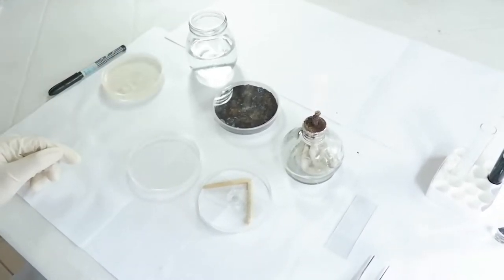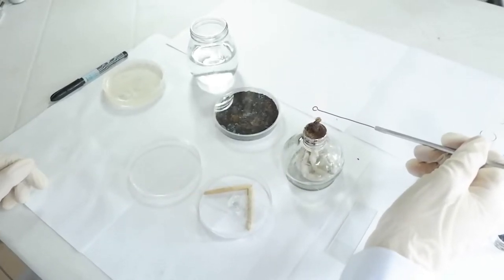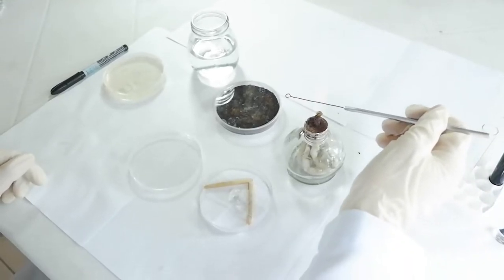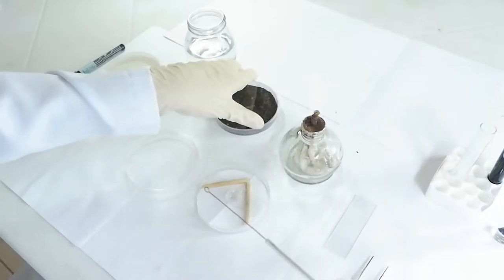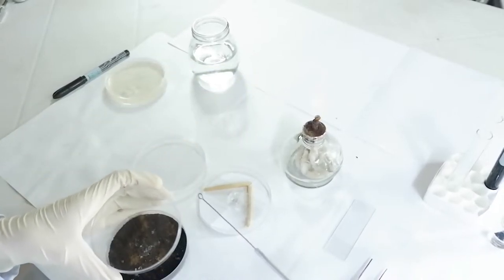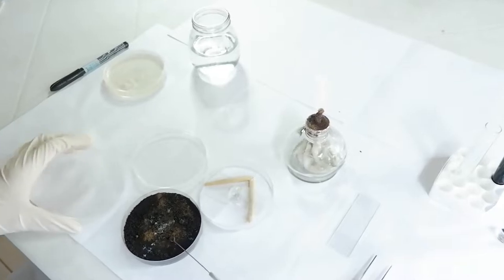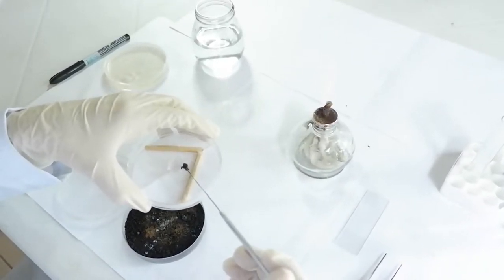Now sterilize your bent needle or your inoculating loop and obtain fungal colonies from air-exposed plates. Inoculate the four sides of the agar block.